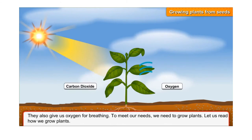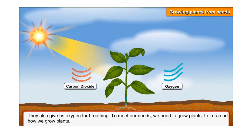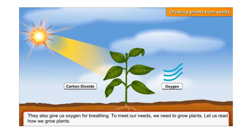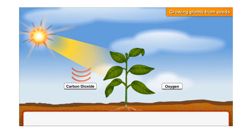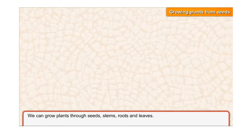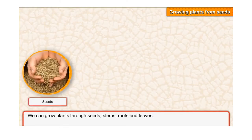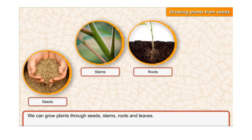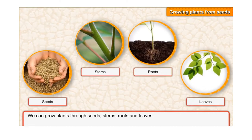To meet our needs, we need to grow plants. We can grow plants through seeds, stems, roots, and leaves.